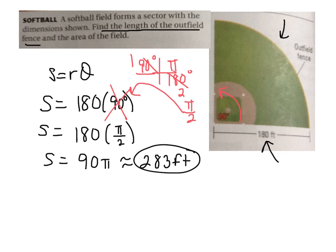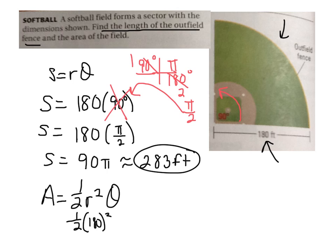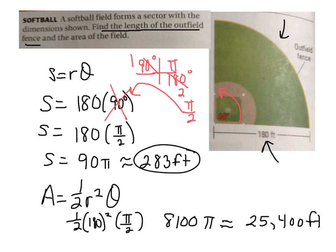Now find the area of the field. The formula is one half times radius squared times theta. So: one half times 180 squared times pi over 2. 180 squared is 32,400; divide by 2 gives 16,200; then divide by 2 again for the pi over 2, giving 8,100 pi. Taking 8,100 times 3.14 gives approximately 25,400 square feet.